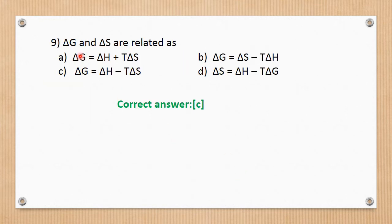Question number 9. Delta G and delta S are related by: delta G = delta H minus T times delta S. This is the correct relation. The correct answer is C.